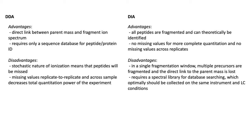With DIA, all peptides are fragmented and can theoretically be analyzed, so there are no missing values and there's more complete quantitation across replicates. However, in a single fragmentation window, multiple precursors are fragmented and the direct link to the parent ion is lost. Therefore, spectral libraries are required for database searching, such that the fragments can be matched to a known library, pulled out, and then continue to be searched. Optimally, these libraries should be collected on the same instrument and using the same LC conditions as the final run, so you still need some DDA experiments for every DIA experiment.